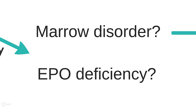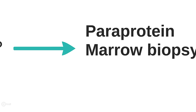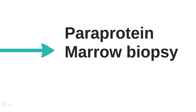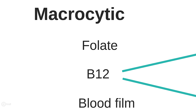Normocytic anemia with a normal or decreased reticulocyte count indicates a marrow problem or erythropoietin deficiency. If there is concern that the bone marrow is causing the problem, a bone marrow biopsy will often be needed. Before this, you should test for paraprotein in urine and serum, which if positive may lead you to a diagnosis of myeloma.